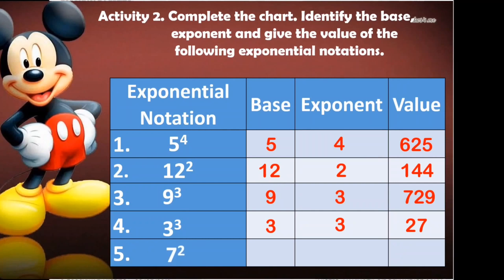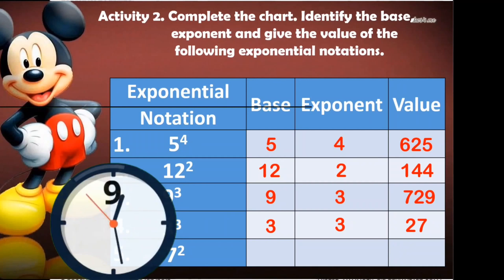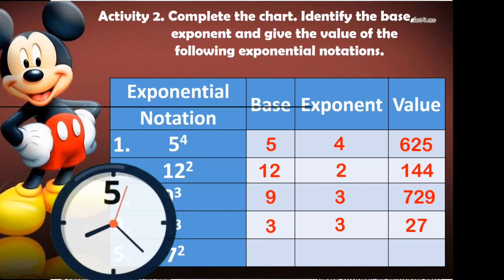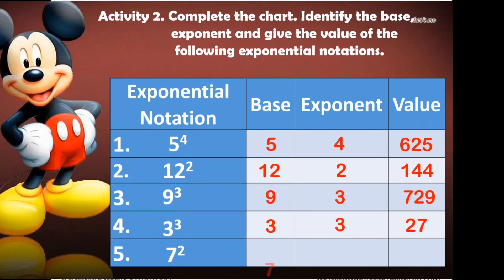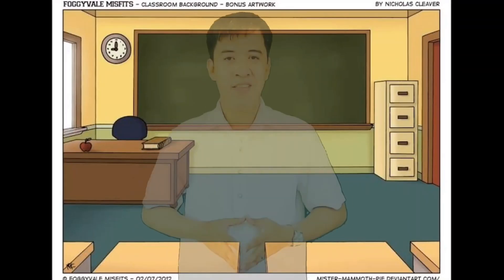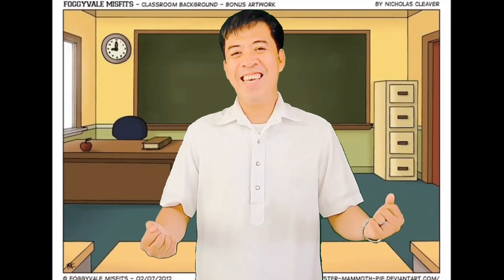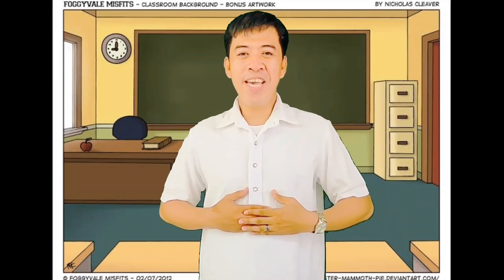And the last one: 7 squared. Correct! Our base is 7, our exponent is 2, and the value is 49. That's all for today, and I hope that I made your math more easy and fun. Just wait for my next video.